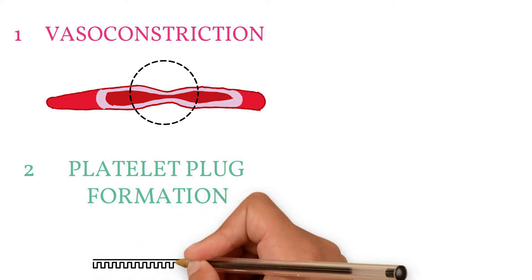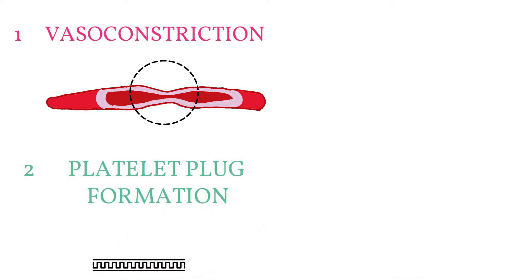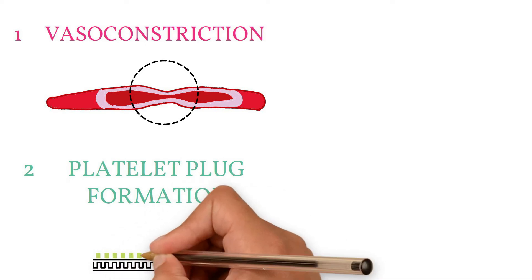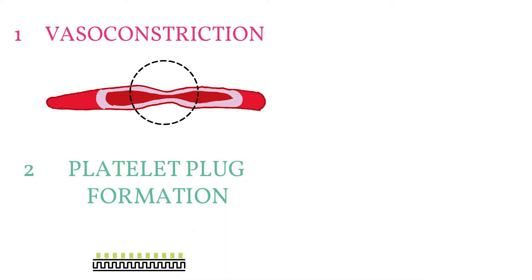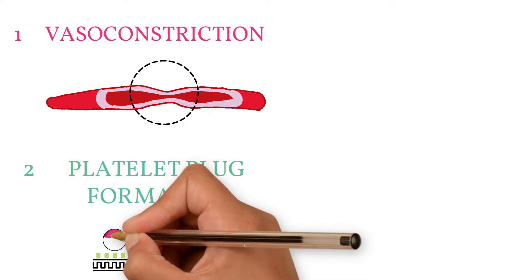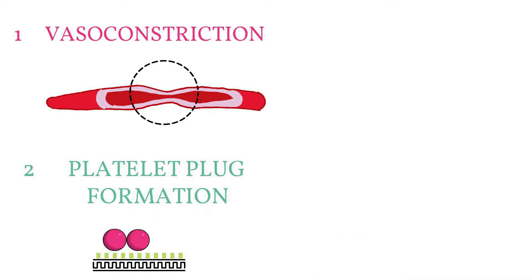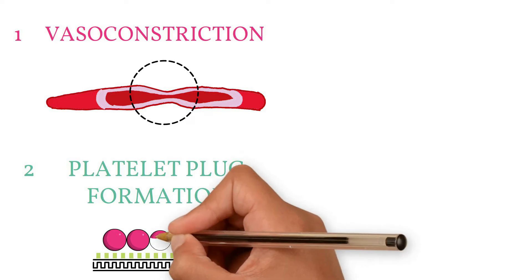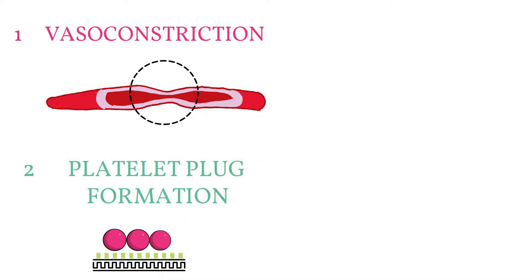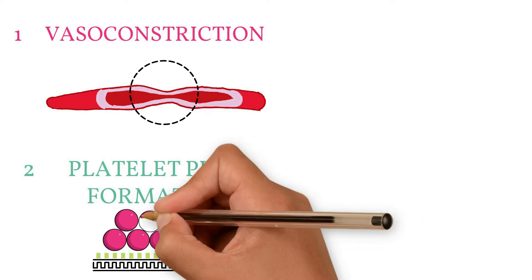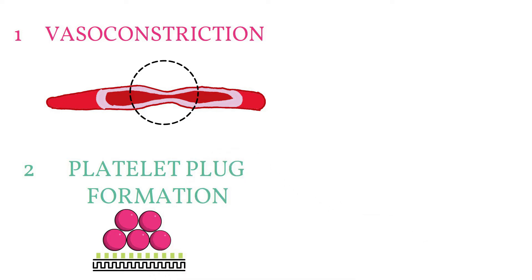Deficiency of von Willebrand factor results in von Willebrand disease. All of these result in bleeding. A platelet plug consists of subendothelial collagen, with von Willebrand factor acting as a glue binding platelets to the subendothelial collagen, and platelets clumped together with the help of fibrinogen in between. This is known as primary hemostasis.